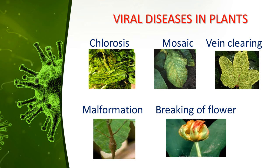Viral diseases in plants: viruses, being obligate parasites, cause diseases in plants while growing inside them. These are systemic in nature, affecting the whole plant. Leaves generally exhibit characteristic symptoms such as chlorosis (e.g., peach yellowing disease), mosaic (e.g., tobacco mosaic disease), vein clearing, malformation (e.g., swirl shoot of cocoa), and breaking of flower color (e.g., tulip mosaic).